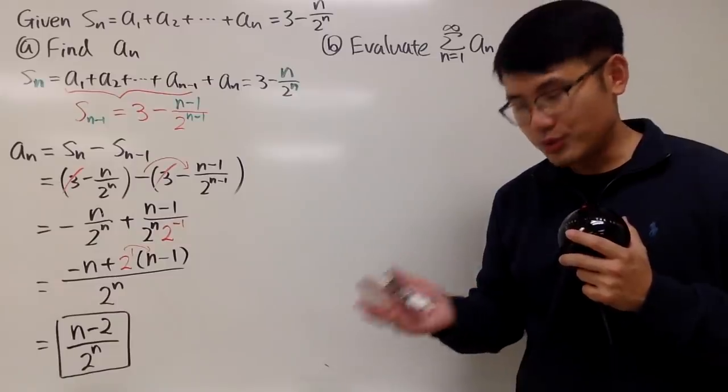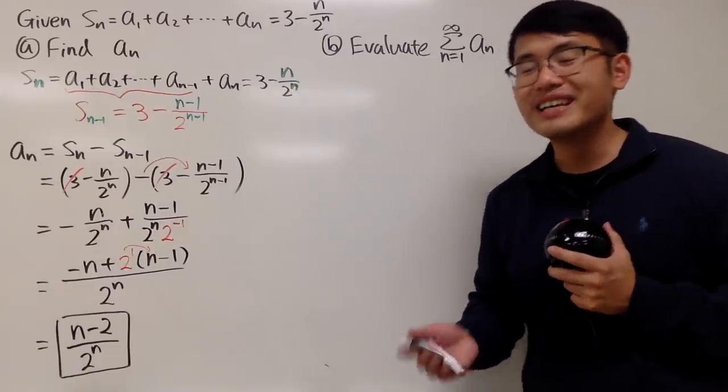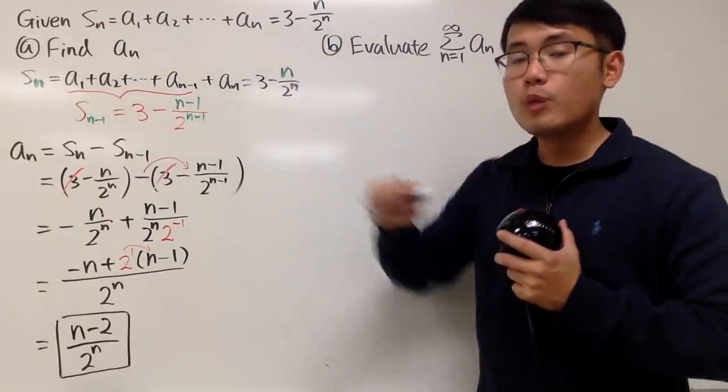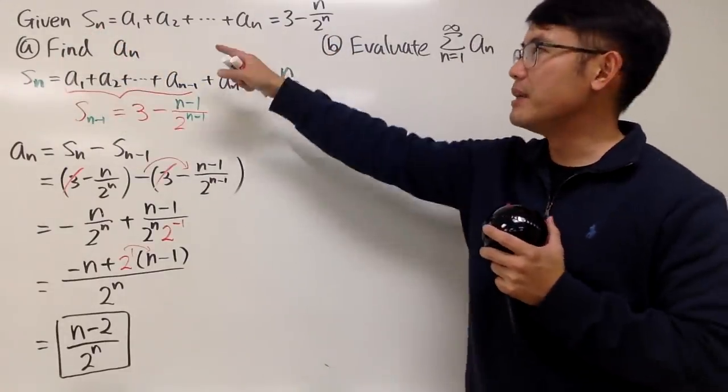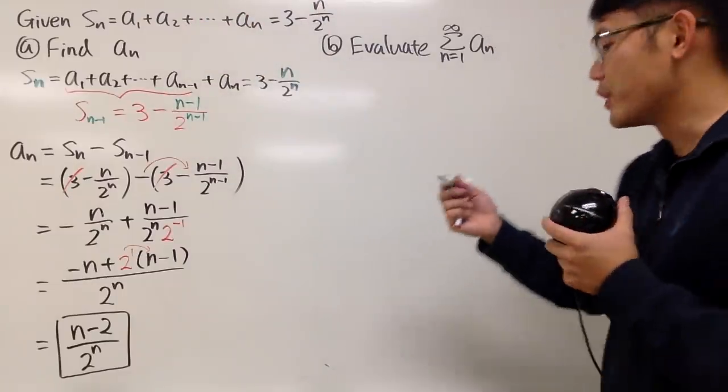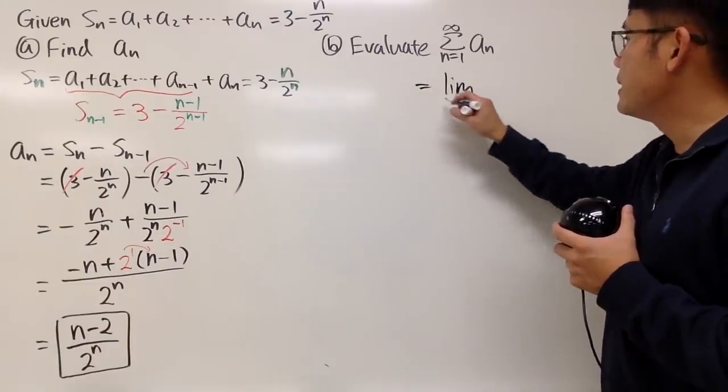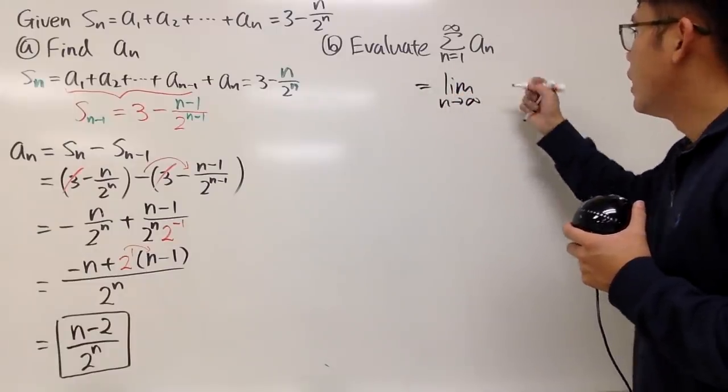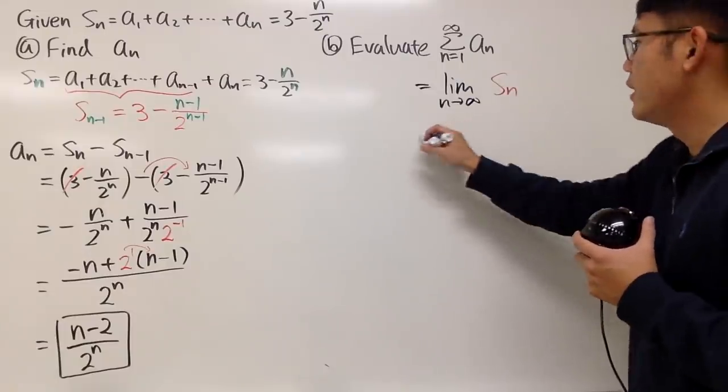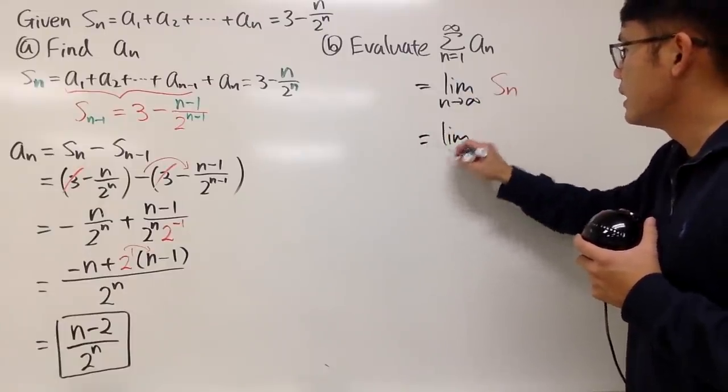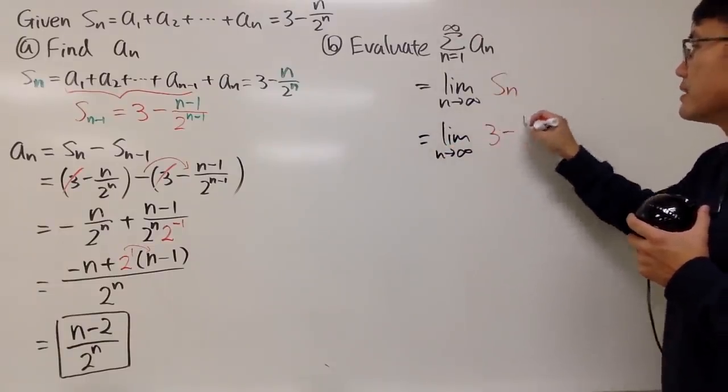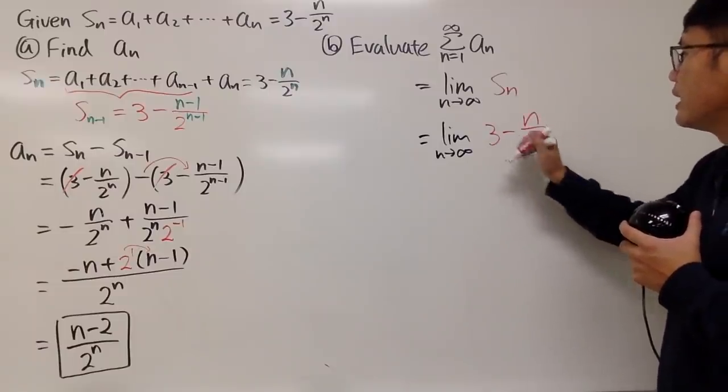All we need to do is take the limit as $n$ goes to infinity of this formula. That would be it. So here we go. All we are doing is take the limit as $n$ goes to infinity of the $S_n$ formula, right? They are equivalent. And now this is the limit as $n$ goes to infinity. And this right here, $S_n$ is $3 - n/2^n$, like this.